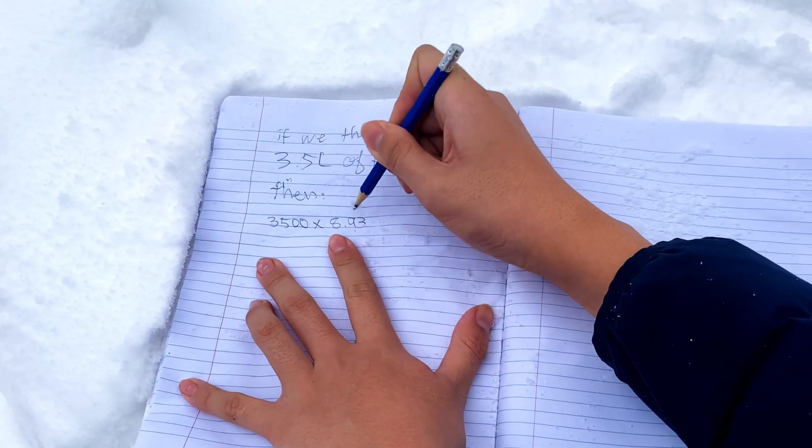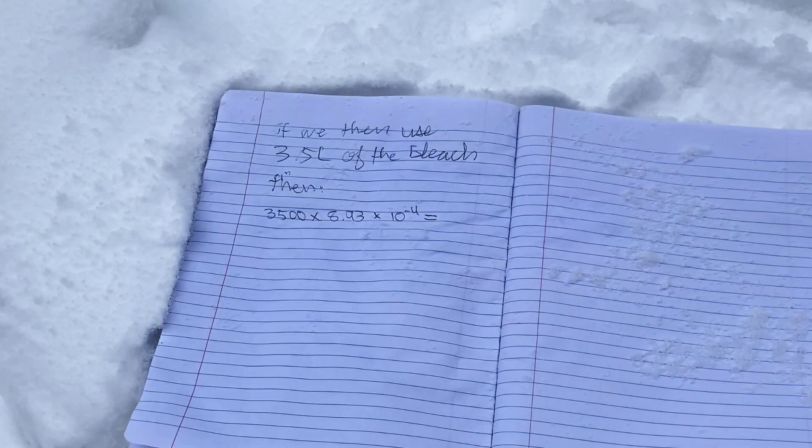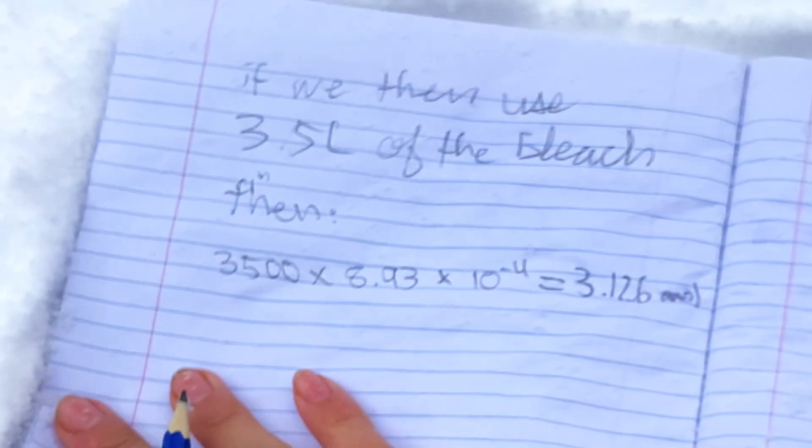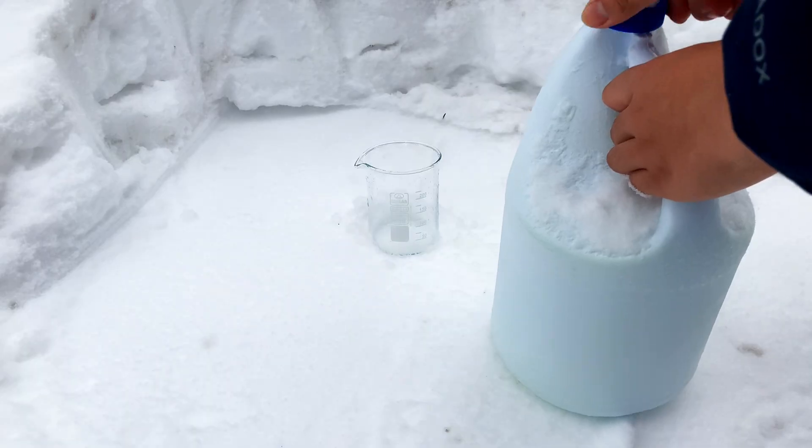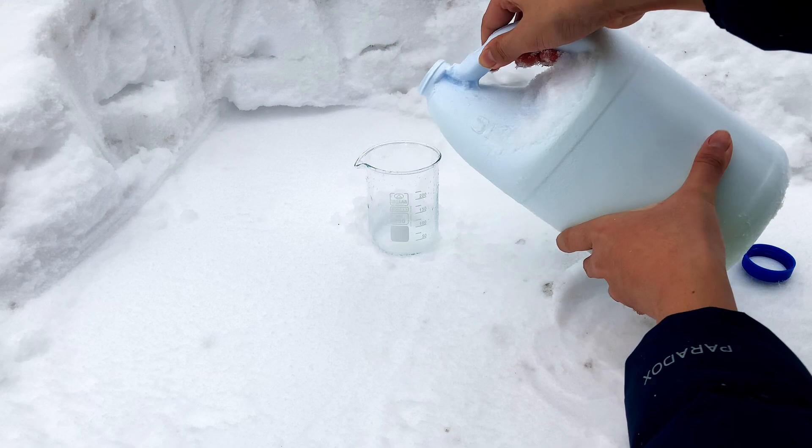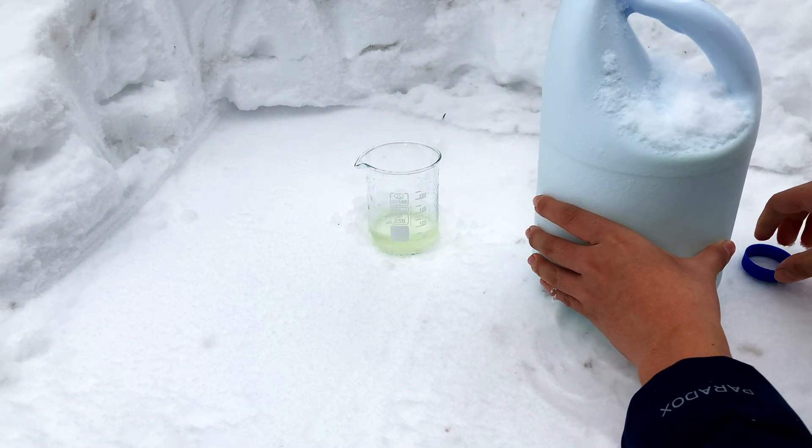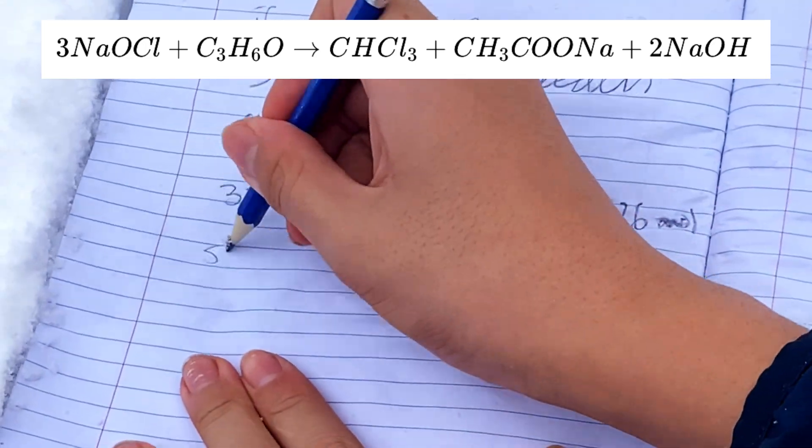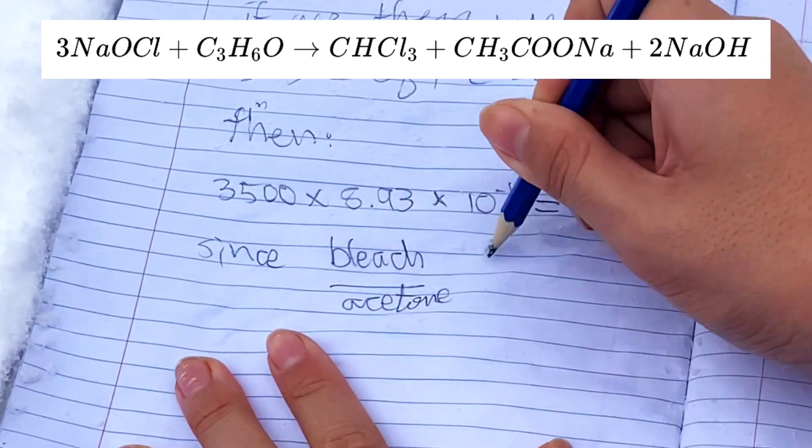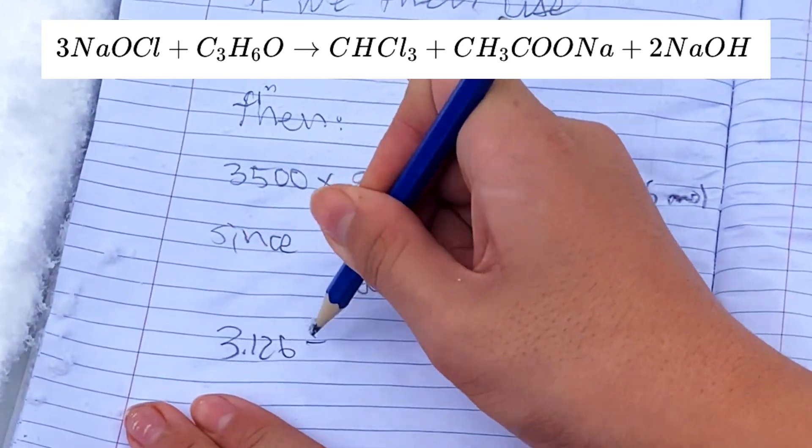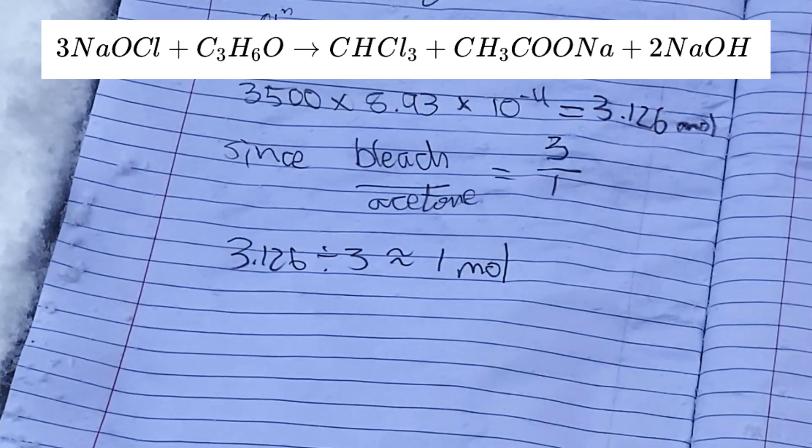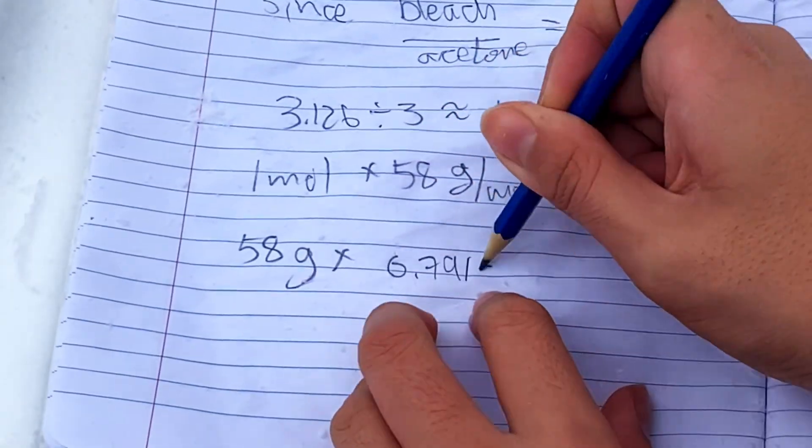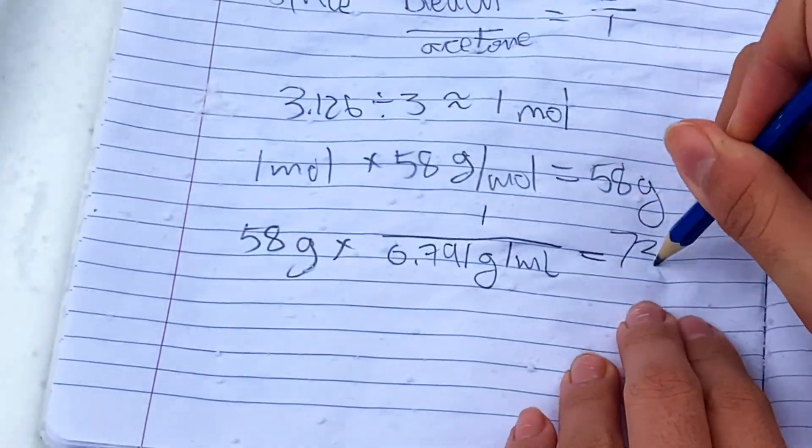Now multiplying by 3,500 gives me the number of moles in 3.5 liters of the bleach, which is 3.126 moles. And I'm using 3.5 liters instead of the 3.57 because I'm going to be dumping out the 70 mils to make sure I have room to add the acetone and to shake it too. Now rounding down the number to 3 as I want the bleach in excess, I can look at the net haloform reaction equation and see that three molecules of bleach react with one molecule of acetone. So dividing 3 by 3 gives 1, which is the number of moles of acetone I'll need, which corresponds to 58 grams, which corresponds to 73 mils. Finally, I could start the experiment.